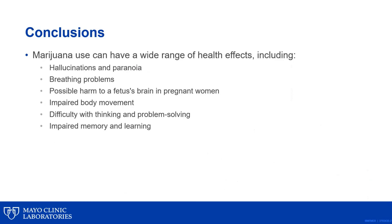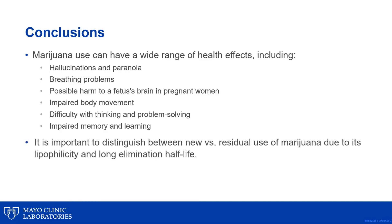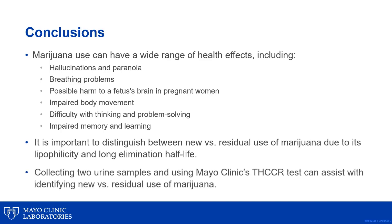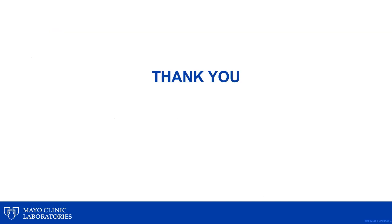In summary, marijuana use can have a wide range of health effects, including hallucinations and paranoia, breathing problems, possible harm to fetus brain in pregnant women, impaired body movement, difficulty with thinking and problem solving, and impaired memory and learning. It is important to distinguish between new versus residual use of marijuana due to its lipophilicity and long elimination half-life. Collecting two urine samples and using Mayo Clinic's THC-CR test can assist with identifying new versus residual use of marijuana. Thank you for your attention. I hope you found this presentation useful. If you have any questions, please contact Mayo Clinic Laboratories.